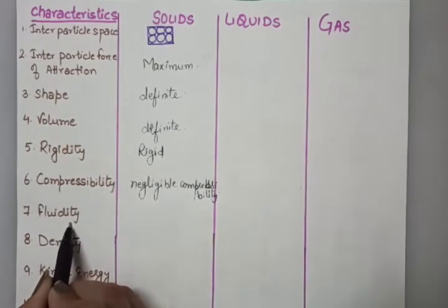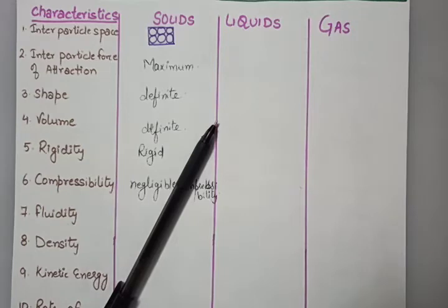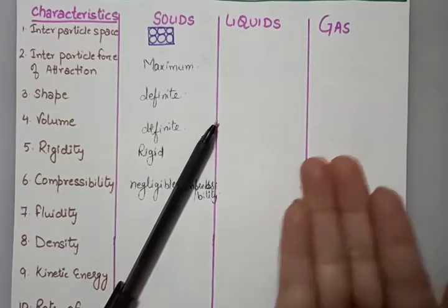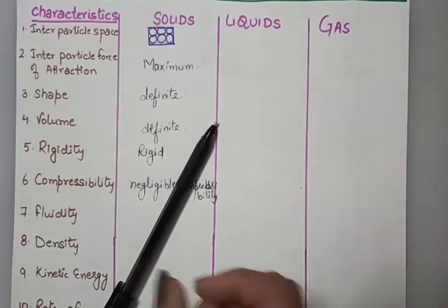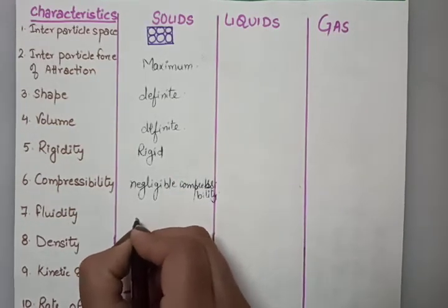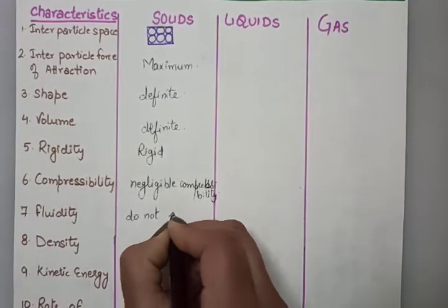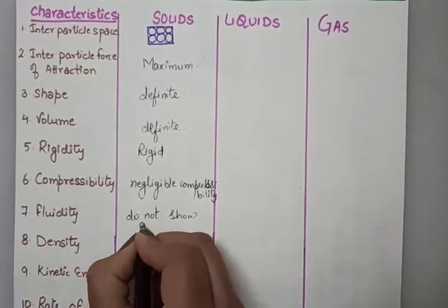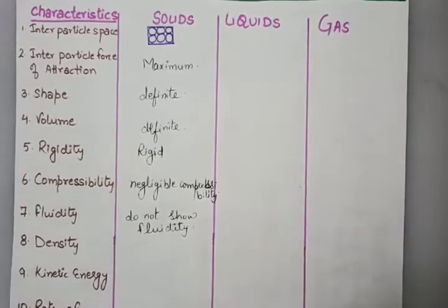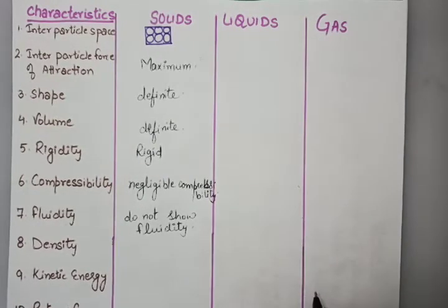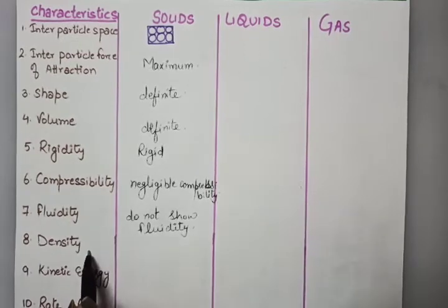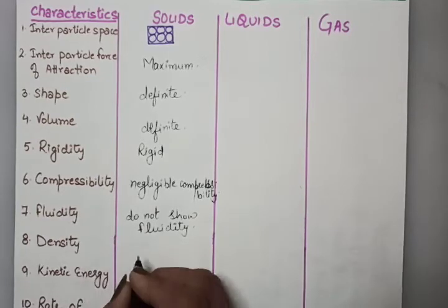The next point is fluidity. Fluidity means the ability to flow. Is this pen able to flow from this position to the next? No — that means solids do not show any property of fluidity; they do not flow. The next is density. As solids have a definite volume, their density is high.